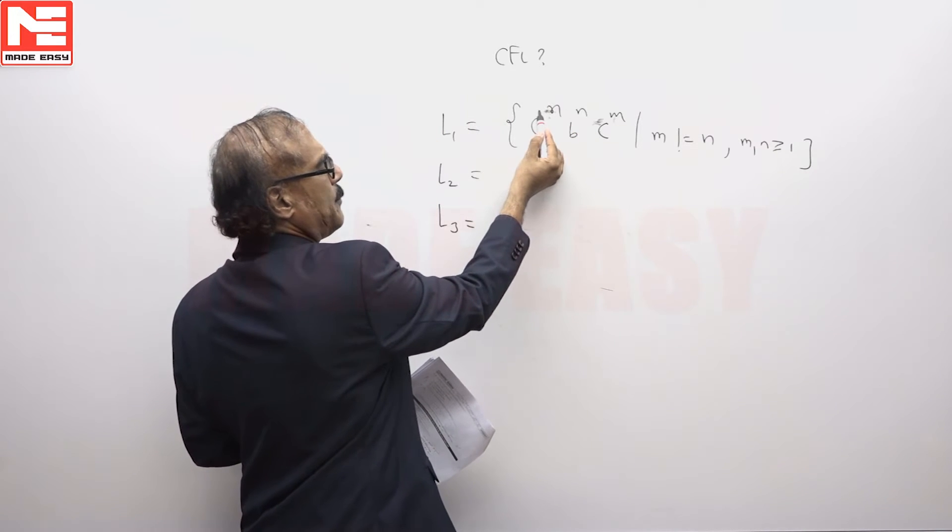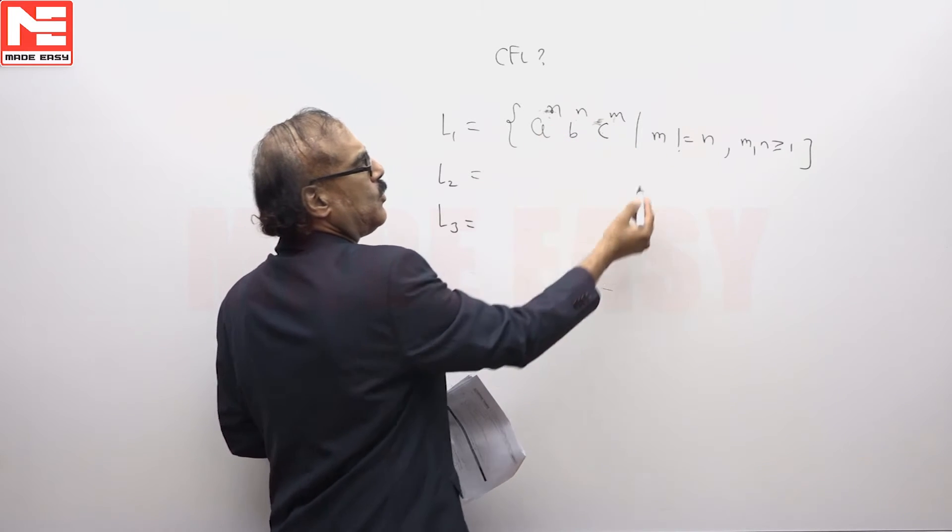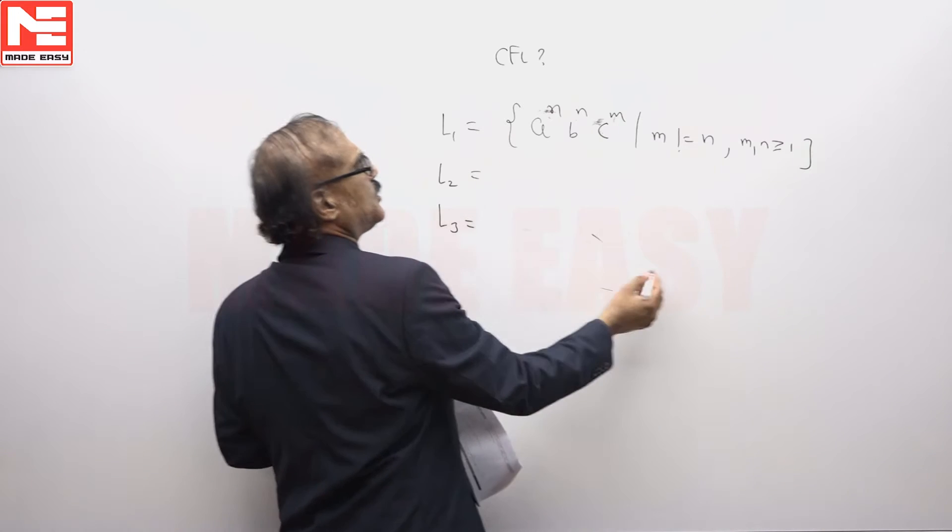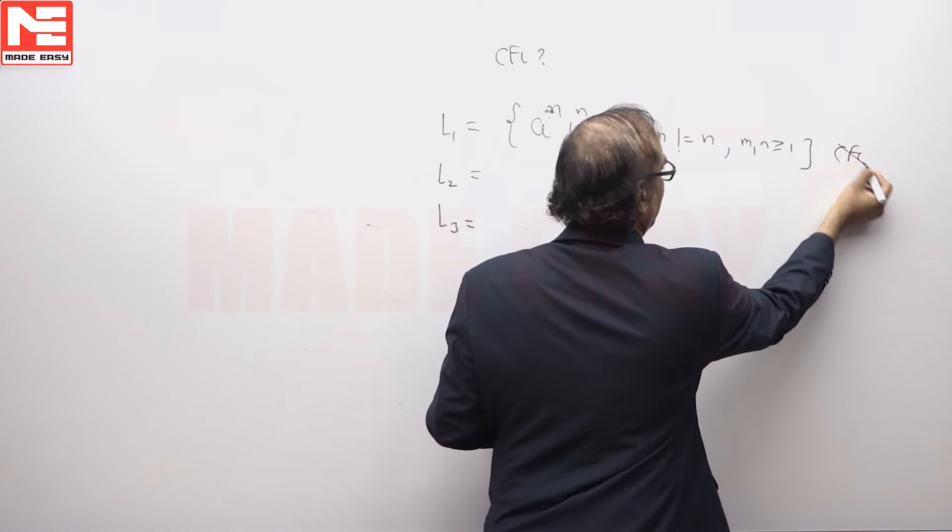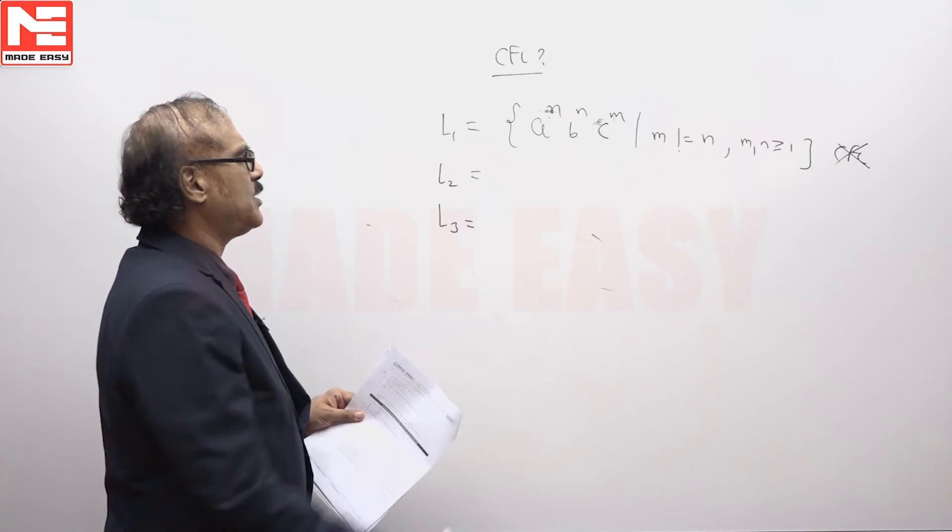So this b is compared with a, b should be equal to a, plus this c should not be equal to b because of this double comparison on the same variable. Clearly this is not a CFL. But we want to know which of the following is CFL. So L1 is not a CFL.